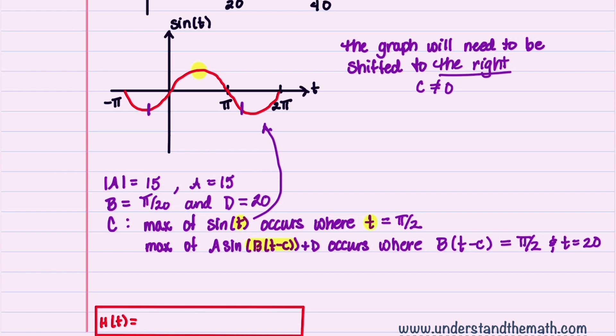So we had our two t's highlighted. Now we have these expressions highlighted, and those are equal to π over 2, and then we'll plug in t as 20. We'll now take this expression B times t minus C equals π over 2 and solve for C.